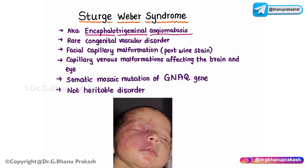'Angiomatosis' refers to the presence of multiple blood vessel malformations known as angiomas in various tissues or organs. In Sturge-Weber syndrome, angiomas are found in the brain and face, along with possible involvement of the eye and other organs. That is why it is called encephalotrigeminal angiomatosis.